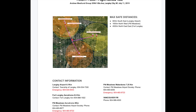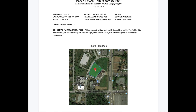Before getting into the details of each item, let's look at a couple of site survey examples. Here's one from a recent flight review candidate. You can see the location relative to surrounding aerodromes and airports, contact information for those, and maximum safe distances. The second page included airspace info, flight details, any coordination required, a detailed map of the flight area, and importantly, a notes section to add information once on site.